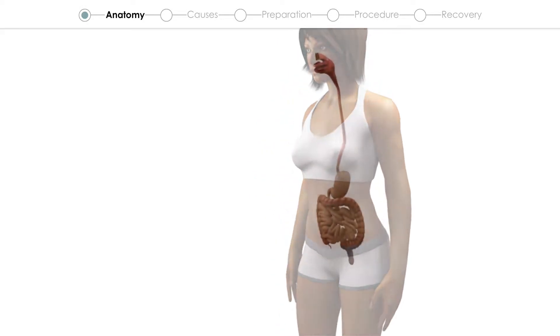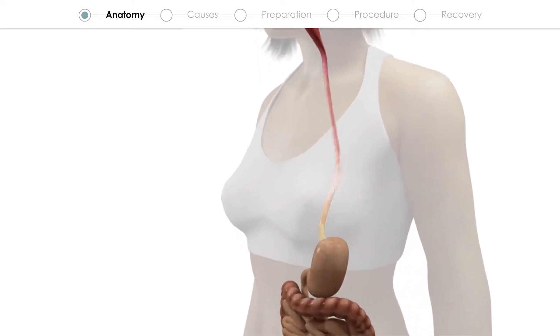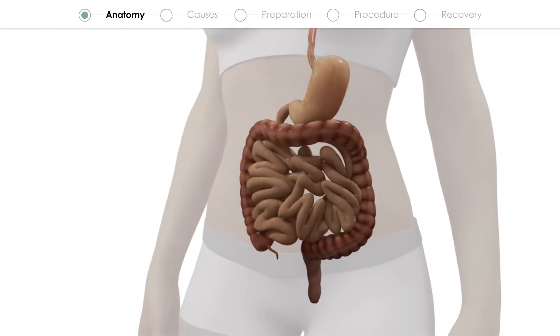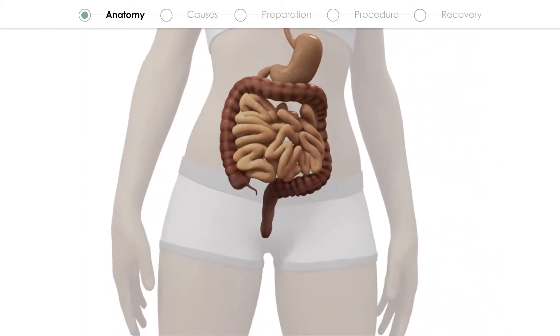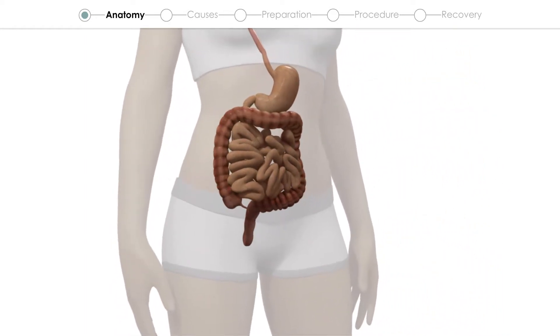The digestive system is composed of the esophagus, the stomach, the small intestine and the large intestine, or colon.